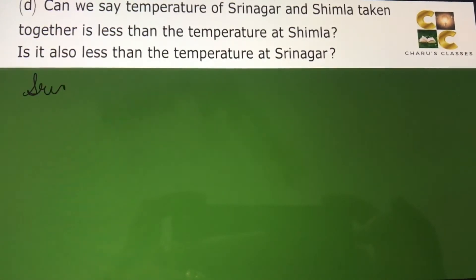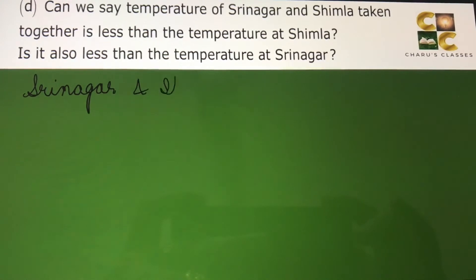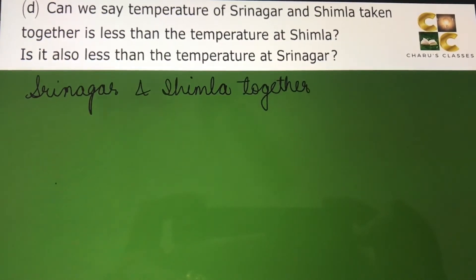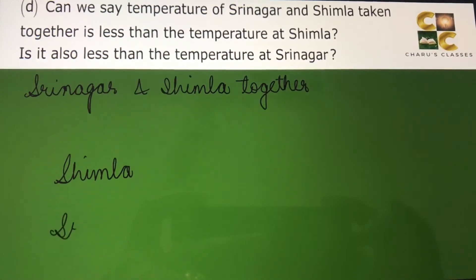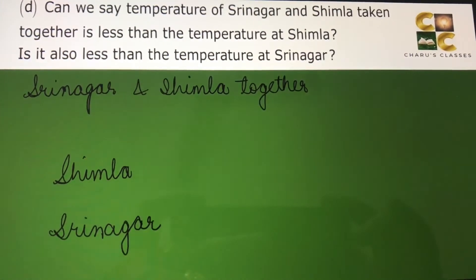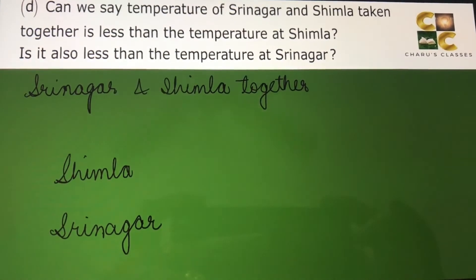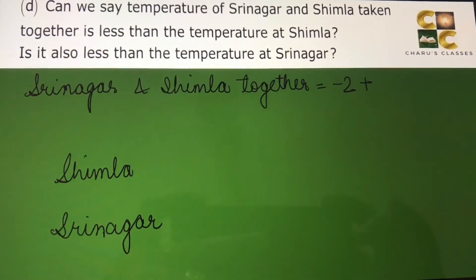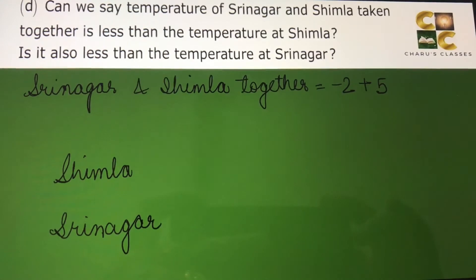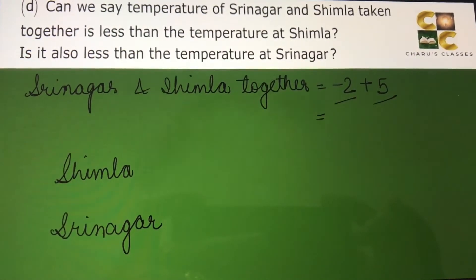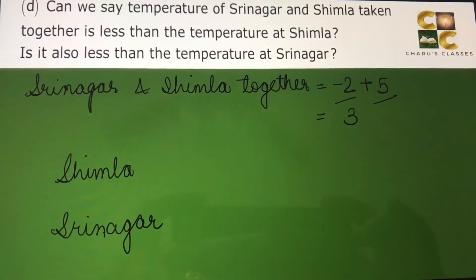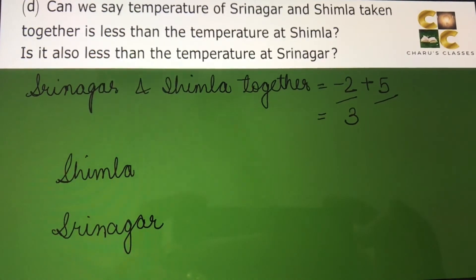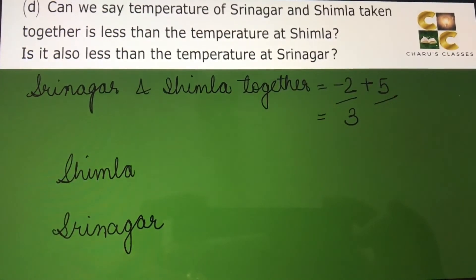First we will find the temperature of Srinagar and Shimla together and then compare it with Shimla and with Srinagar. Srinagar is minus 2 degrees Celsius and Shimla is 5 degrees Celsius, so we calculate minus 2 plus 5. When one number is negative and the other is positive, we always subtract: 5 minus 2 equals 3, and since 5 is the bigger number the sign is positive — so the combined temperature is 3 degrees Celsius.